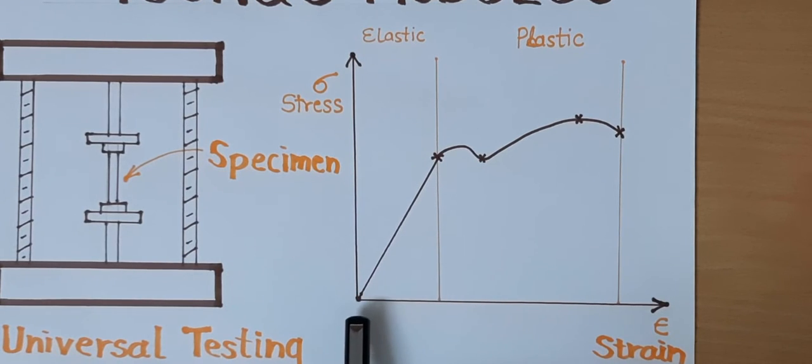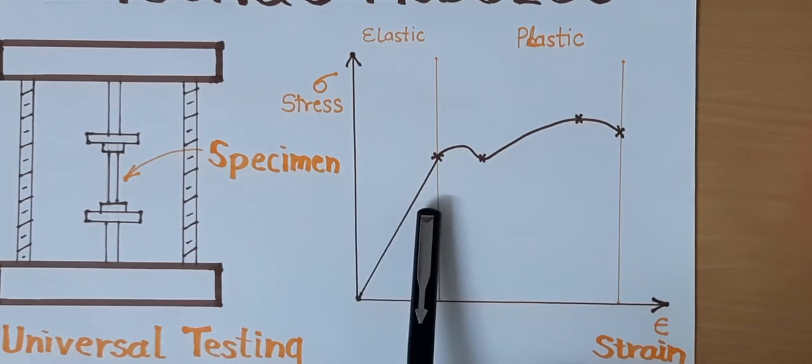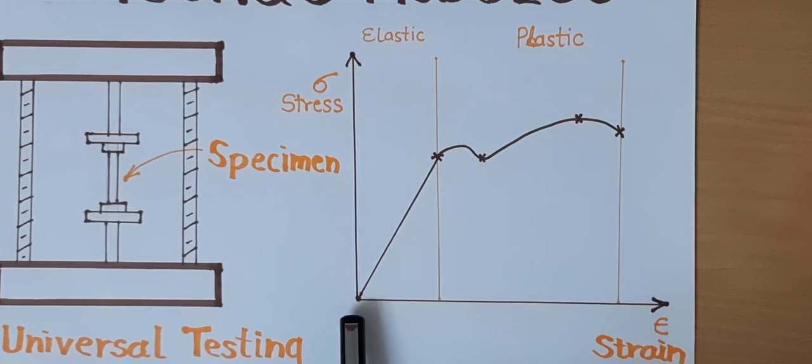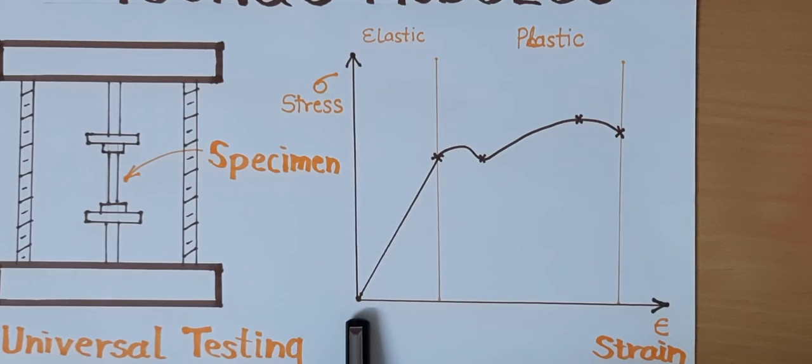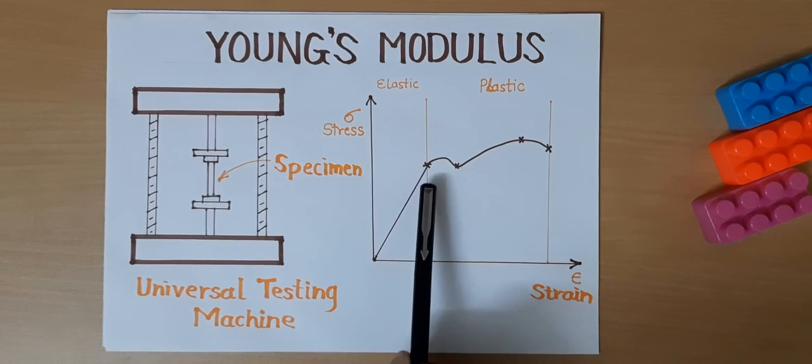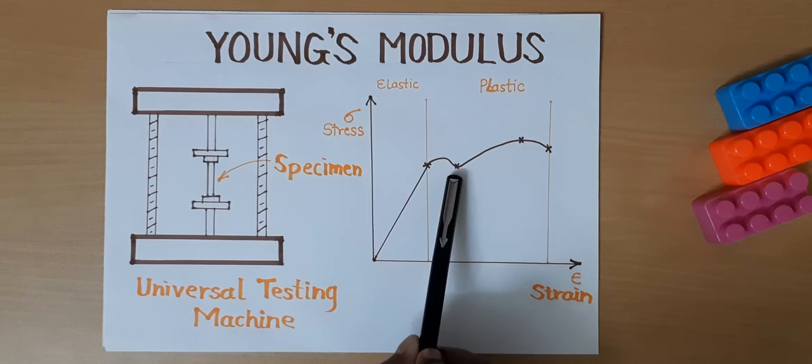Within the elastic limit, the body will try to come back to its original position when external load is removed. But when it crosses beyond the elastic limit, there will be a plastic region.